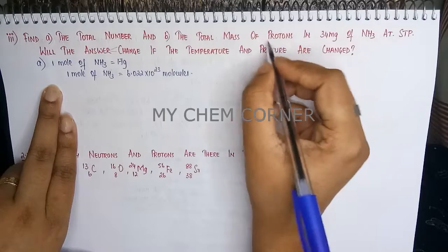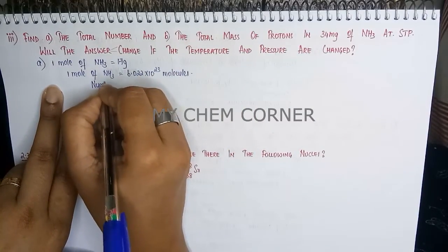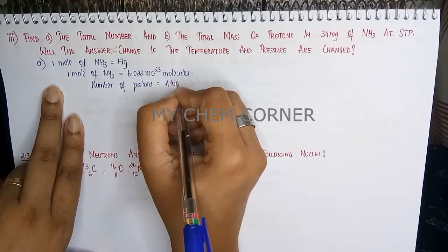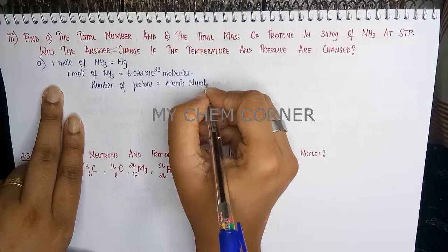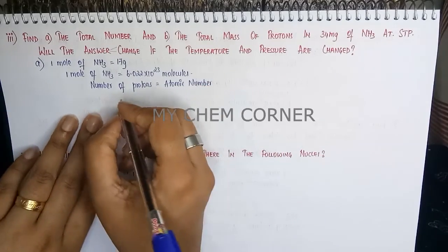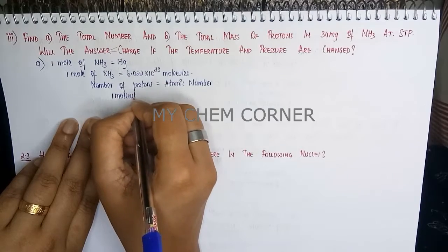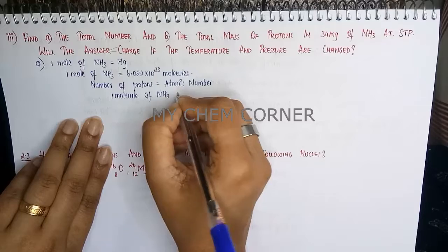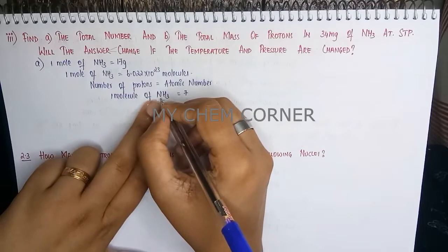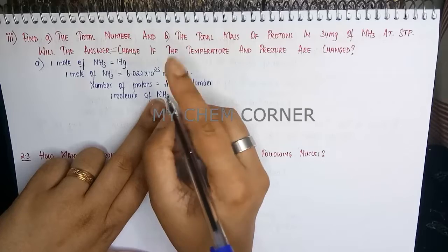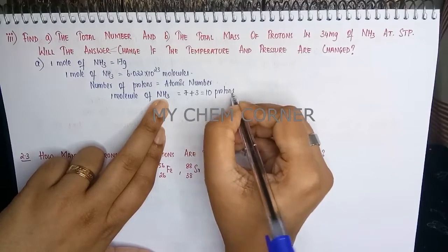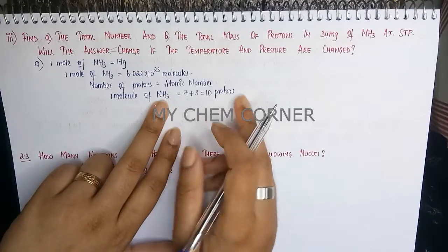Now, when we talk about protons, the number of protons equals the atomic number itself. To calculate the number of protons in a particular atom, we look at its atomic number — both values are the same. Therefore, one molecule of ammonia contains: atomic number of nitrogen = 7 protons, plus atomic number of hydrogen = 1, but we have three hydrogen atoms, so 1 × 3 = 3. That gives us 10 protons per molecule of ammonia.